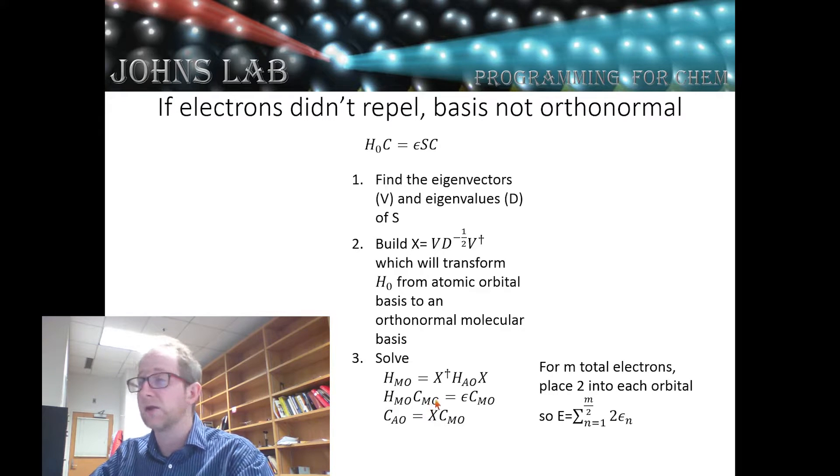We'll then solve the eigenvalue equation H_MO times our eigenvectors equals epsilon eigenvectors. And that's just a matter of diagonalizing this matrix and finding the appropriate eigenvectors. And then we can transform those vectors back to our atomic orbital vectors just by multiplying by X from the left. Still, the most important thing here is the eigenvalues. And our total energy in this case is still the same. We just look at the eigenvalues of this matrix. And again, we put two electrons into the two lowest orbitals.